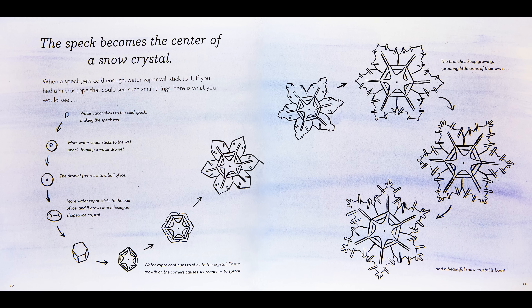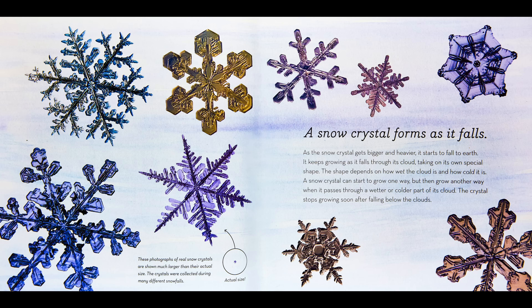More water vapor sticks to the ball of ice, and it grows into a hexagon-shaped ice crystal. Water vapor continues to stick to the crystal; faster growth on the corners causes six branches to sprout. The branches keep growing, sprouting little arms of their own, and a beautiful snow crystal is born.